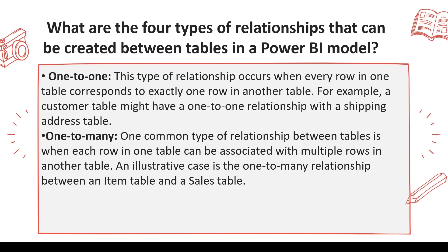One is one-to-one. It's typically created between two tables having the exact same number of rows as the other table. This type of relationship occurs when every row in one table corresponds to exactly one row in another table. For example, if I have an item table and a duplicate of that item table, each item ID corresponds to one item ID in another table.